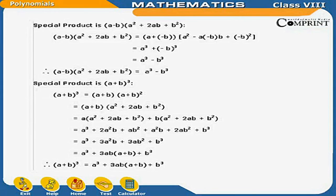Therefore: (A−B)(A²+AB+B²) = A³−B³. Special product: (A+B)³ = (A+B)(A+B)² = (A+B)(A²+2AB+B²) = A(A²+2AB+B²) + B(A²+2AB+B²) = A³+2A²B+AB² + A²B+2AB²+B³ = A³+3A²B+3AB²+B³ = A³+3AB(A+B)+B³. Therefore: (A+B)³ = A³+3AB(A+B)+B³.